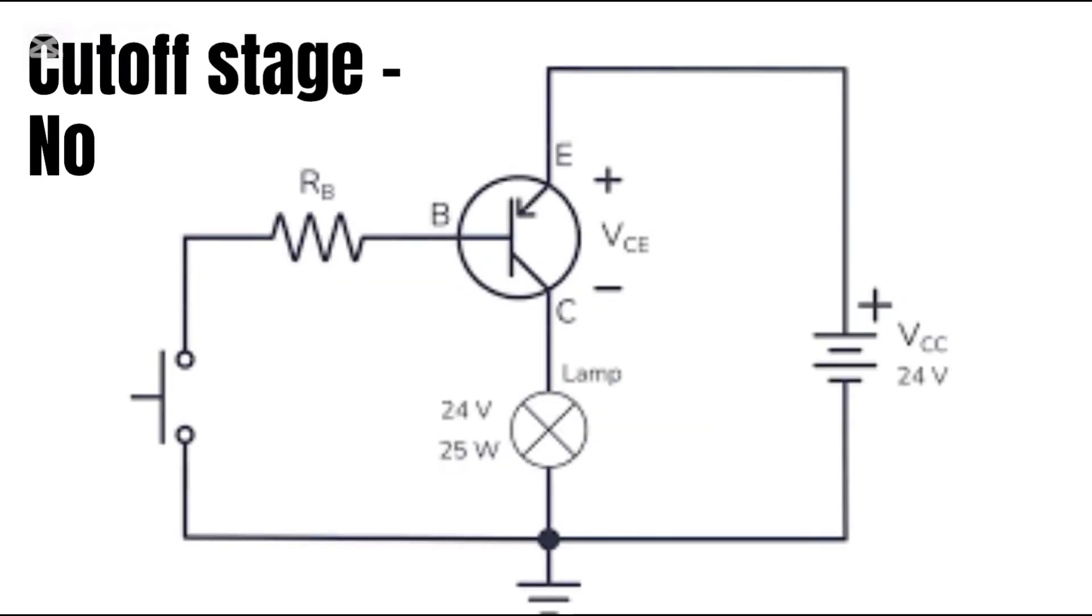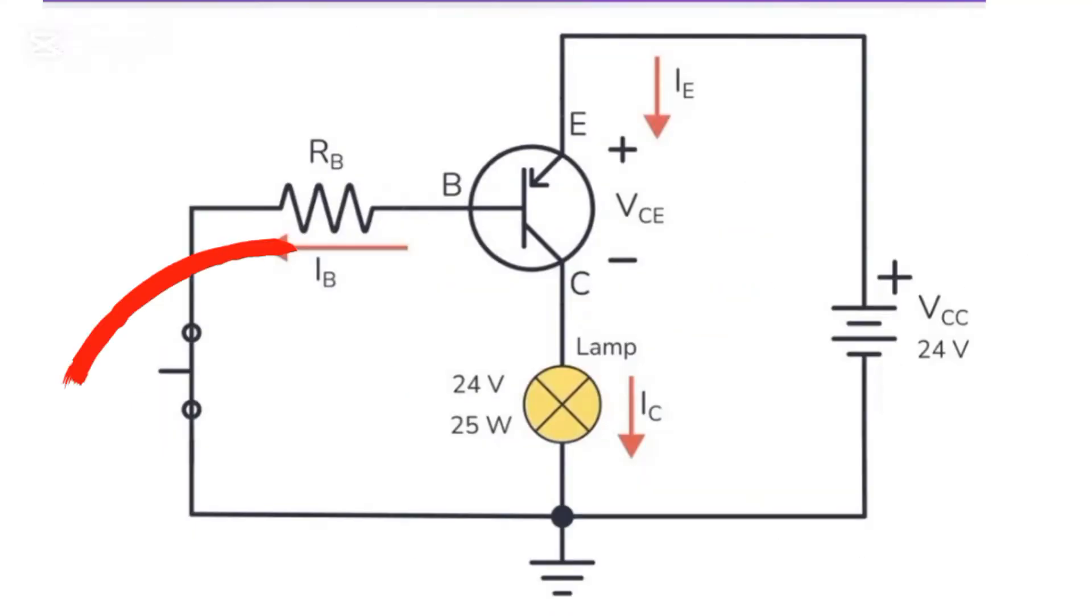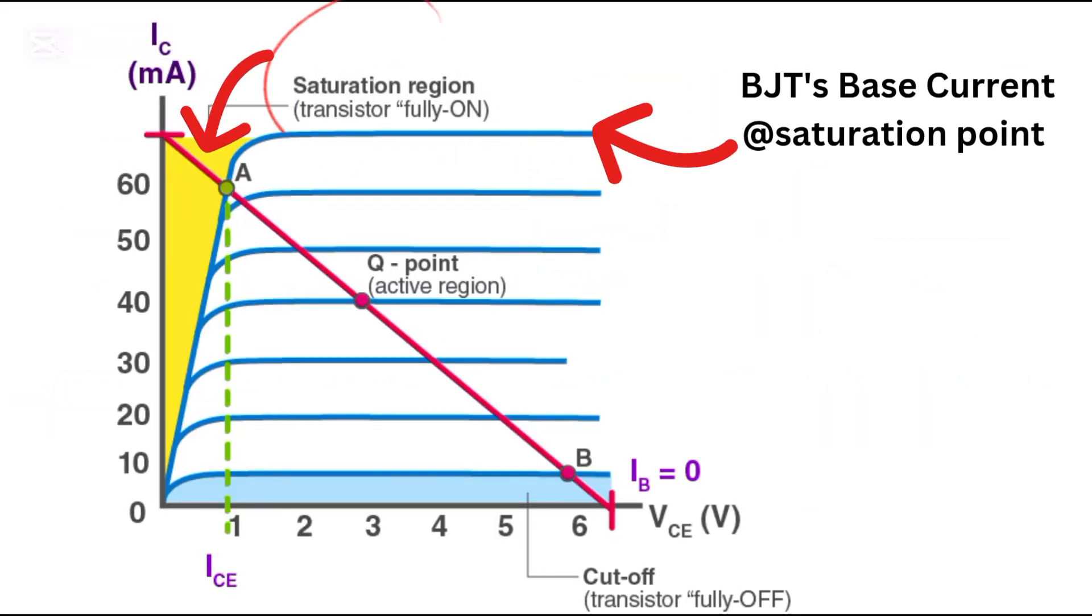In the cutoff region, which is the off state, no current flows through the transistor. It acts like an open switch. In the saturation region, which is the on state, maximum current flows through the transistor. It behaves like a closed switch.